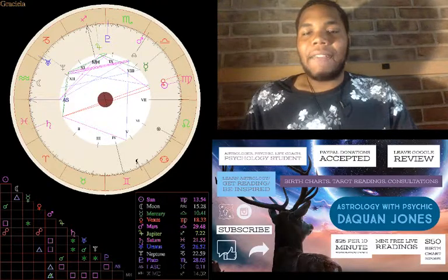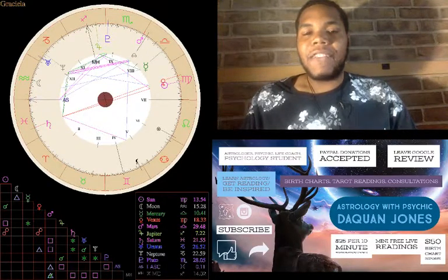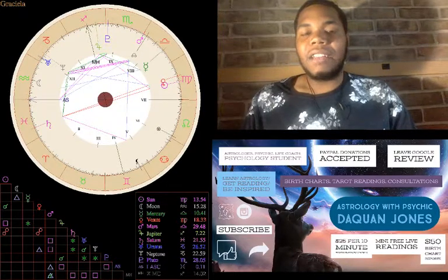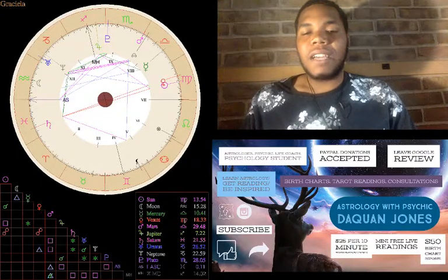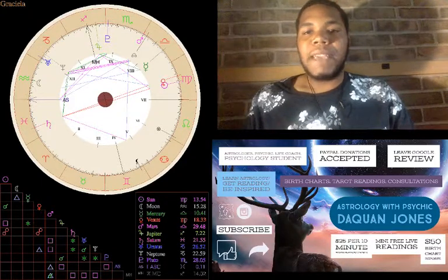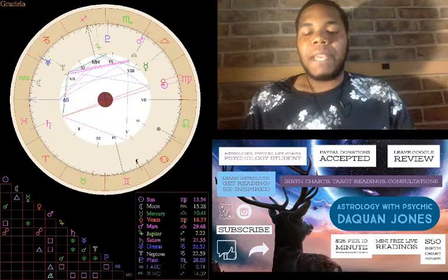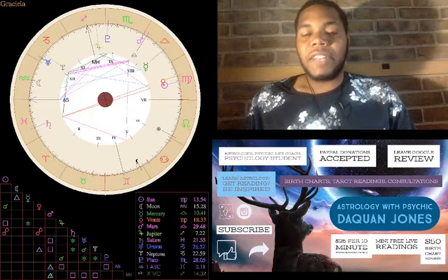Normally, this would be a very challenging placement to have Venus in Virgo. But again, having it conjunct the Sun in the 7th house really puts this big emphasis on being loving and compassionate in relationships.